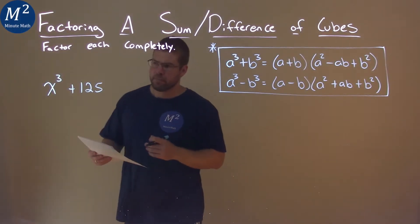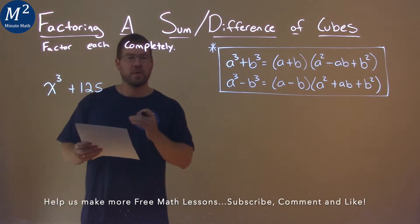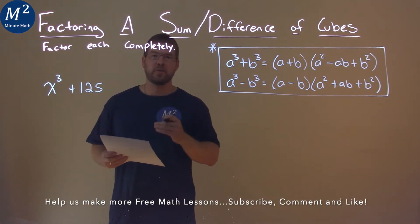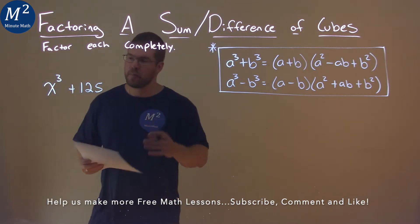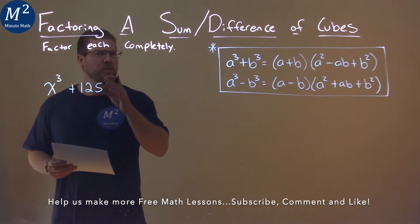We're given this problem right here: x to the third plus 125, and we need to factor this completely. Well, this is a sum of cubes. We have x cubed plus 125.